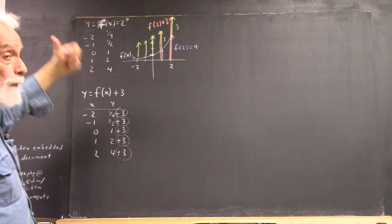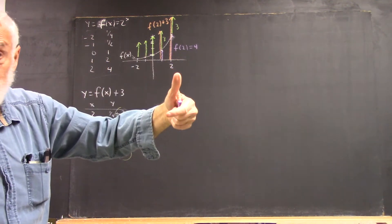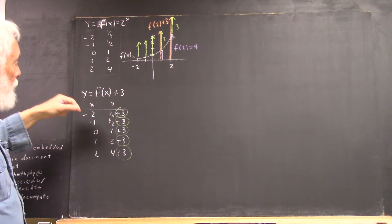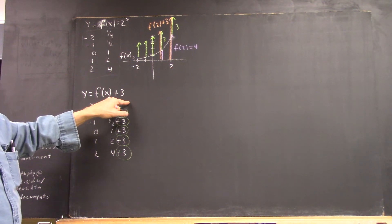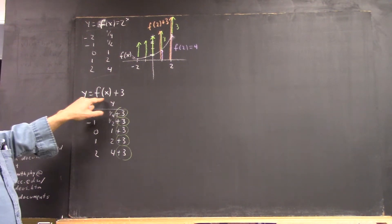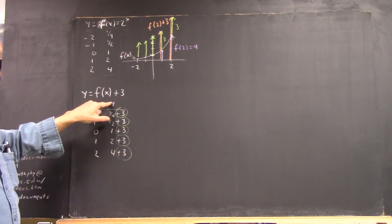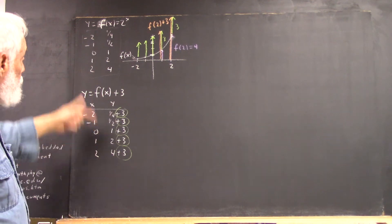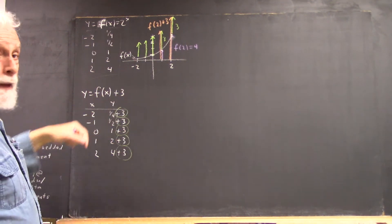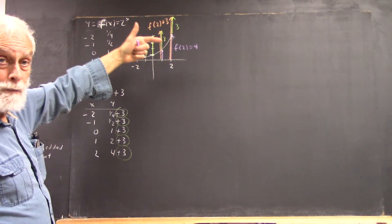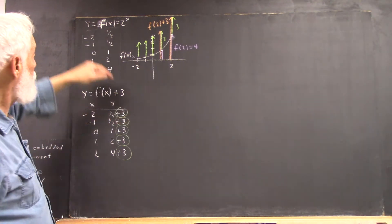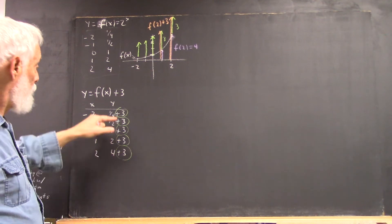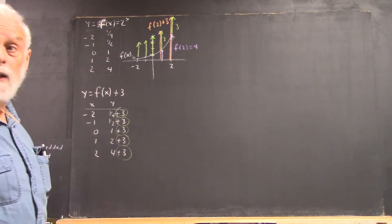Now, if we want to graph f of x plus 3, that means we add 3 to every value of f of x. Whatever x is, we find f of x, and we add 3. So, to make a table for f of x plus 3, it doesn't matter what our function up here is. We just take the values on this table and copy them down, and then add 3 every time.